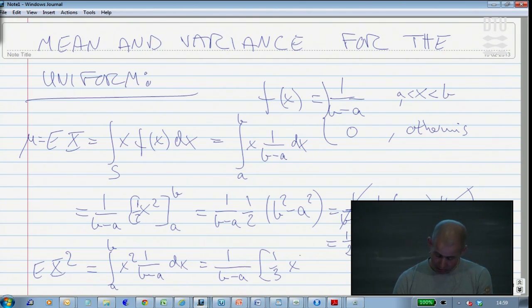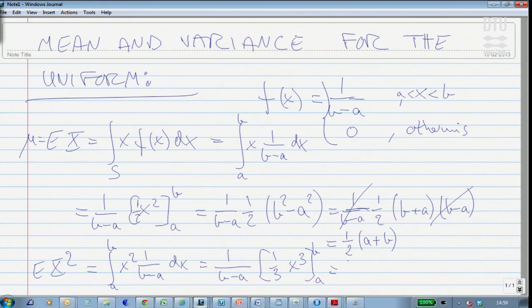The function whose derivative would be x squared would be 1 third x to the third, from a to b. And then I plug in, I have 1 third, I have 1 over b minus a, and then I have b to the power of 3 minus a to the power of 3.